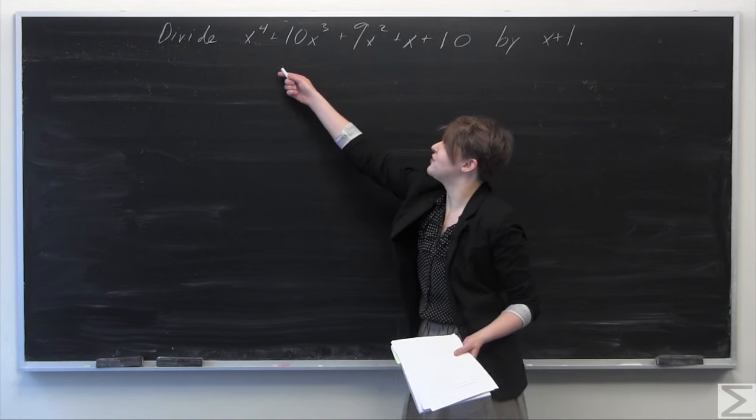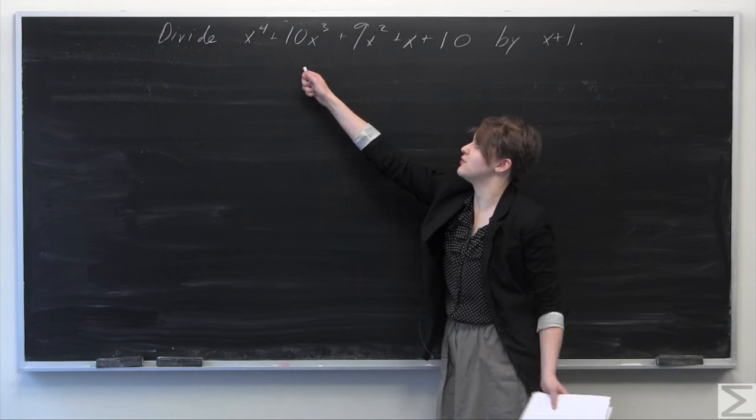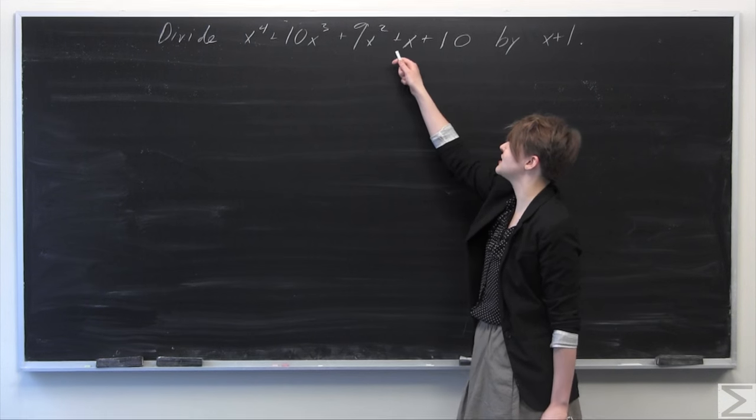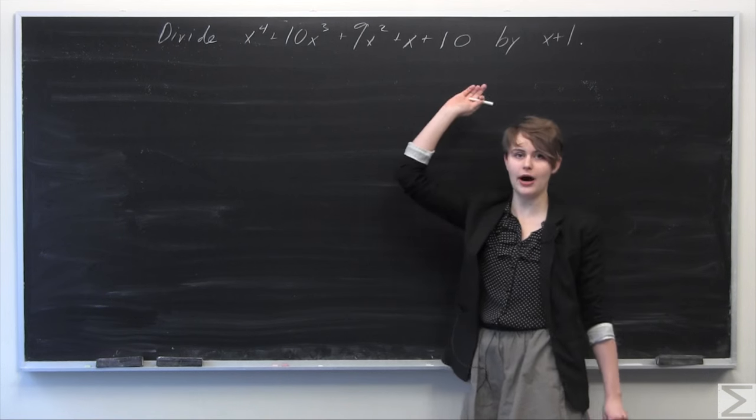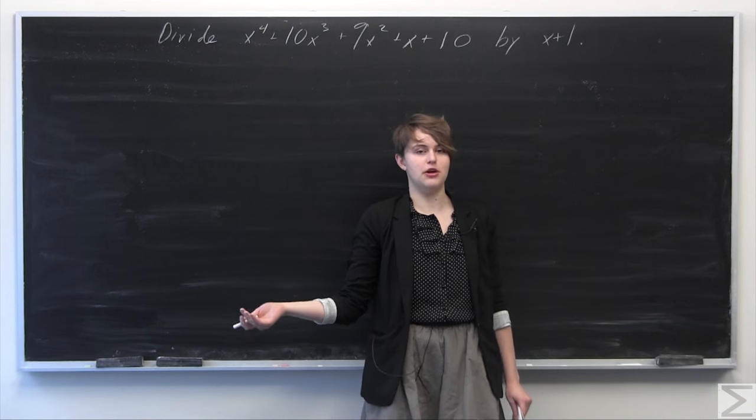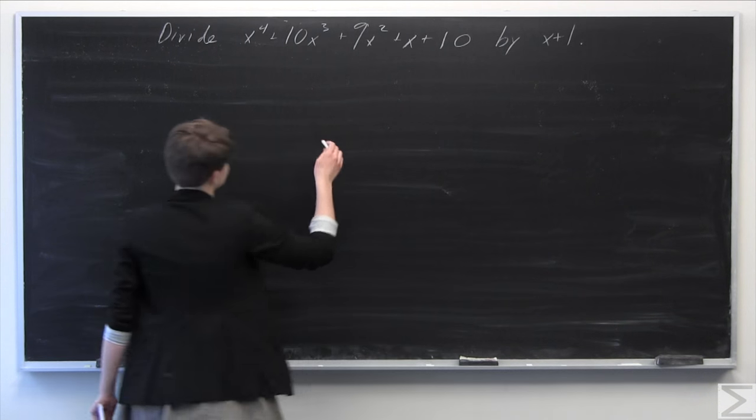This problem asks you to divide this polynomial here, x to the fourth plus 10x cubed plus 9x squared plus x plus 10, all by x plus 1. So we're going to use polynomial long division in order to solve this problem.